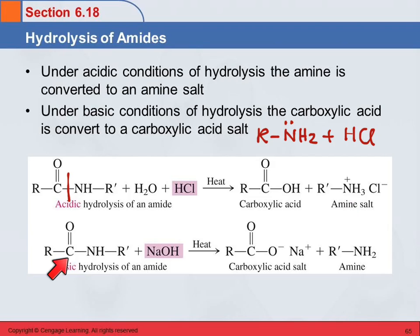If we do this under basic conditions, again it's going to hydrolyze and cut here. Then we end up with a carboxylic acid, and we've got a base. What happens when you mix a carboxylic acid and a base? You're going to get the carboxylate salt. And this time the amine will stay as an amine, because the amine is a base and it's not going to react with a base.